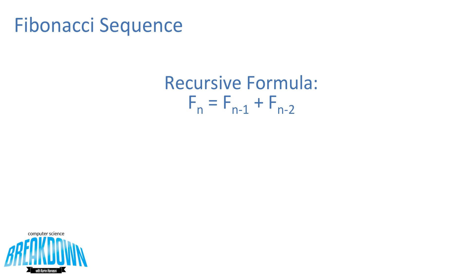We can create a recursive formula for the Fibonacci sequence, which is the sum of the two previous numbers as shown earlier. So F of n is equal to F of n minus 1 plus F of n minus 2. With this recursive formula, it requires two base cases.